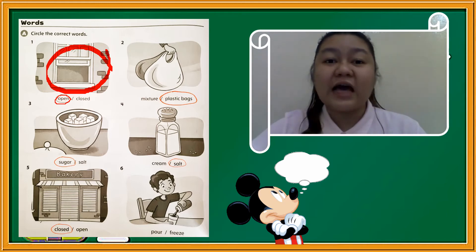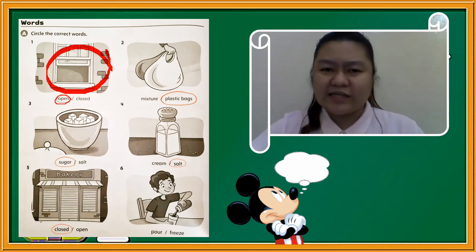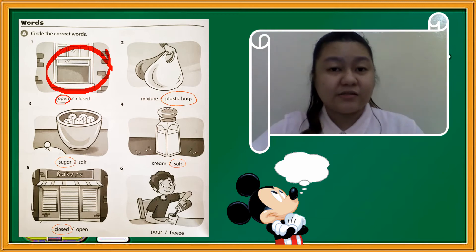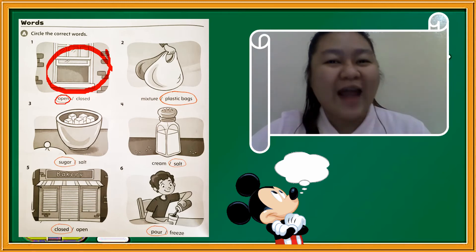Now for the last one, number 6: what is it doing? Is it pour or freeze? The answer is pour. Correct.